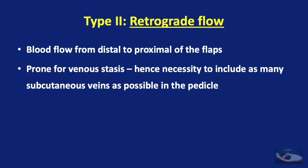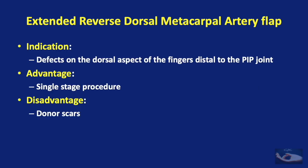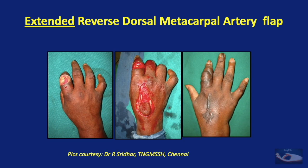The second type of blood flow is retrograde — that is, from distal to proximal. Since the blood flow is retrograde, it is prone to venous stasis; hence it is necessary to include as many subcutaneous veins as possible in the pedicle. An example is the extended reverse dorsal metacarpal artery flap, based on retrograde flow from communication with volar side vessels at the level of the neck of the metacarpals. These are ideal for defects on the dorsal aspect of the fingers distal to the proximal interphalangeal joint — a single stage procedure, though with donor scars.